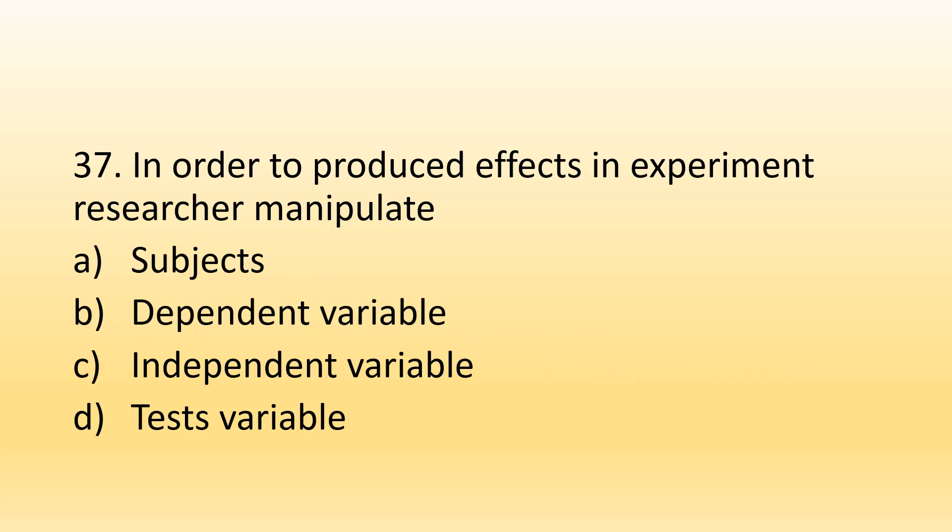Number 37. In order to produce effects in experiments, a researcher manipulates: Option A, Subjects; Option B, Dependent variable; Option C, Independent variable; Option D, Test variable. The right option is Option C, Independent variable. In overall research, the main purpose of a researcher is to first manipulate the independent variable so that its effect on the dependent variable can be observed.